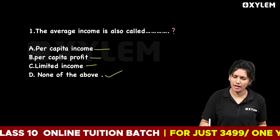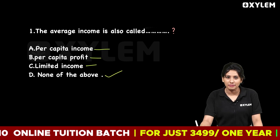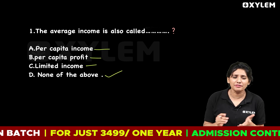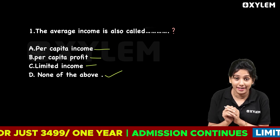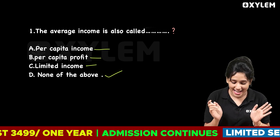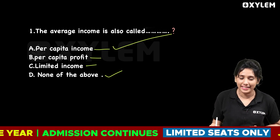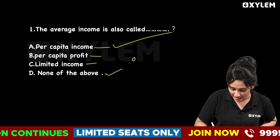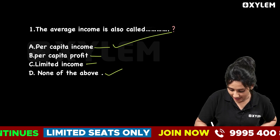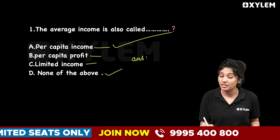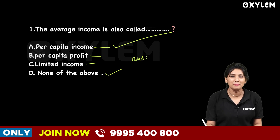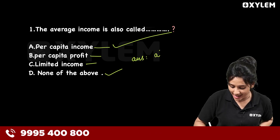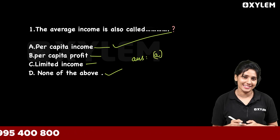Option D: None of the above. The average income is also called — yes — per capita income. Option A, per capita income, is the correct answer.